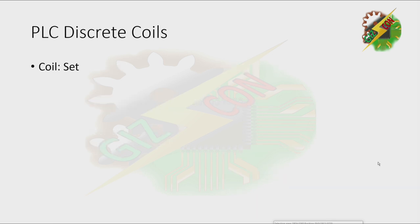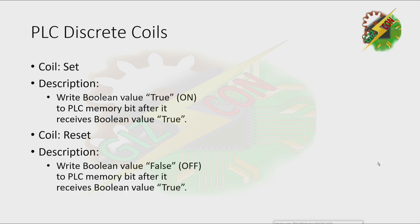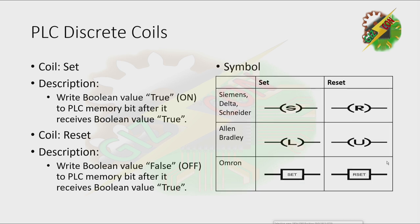Next, we have set coil: it writes boolean value true or on to the PLC memory bit after it receives boolean value true. Reset: it writes boolean value false to the PLC memory bit after it receives boolean value true. These are the different symbols for set and reset depending on the brand.